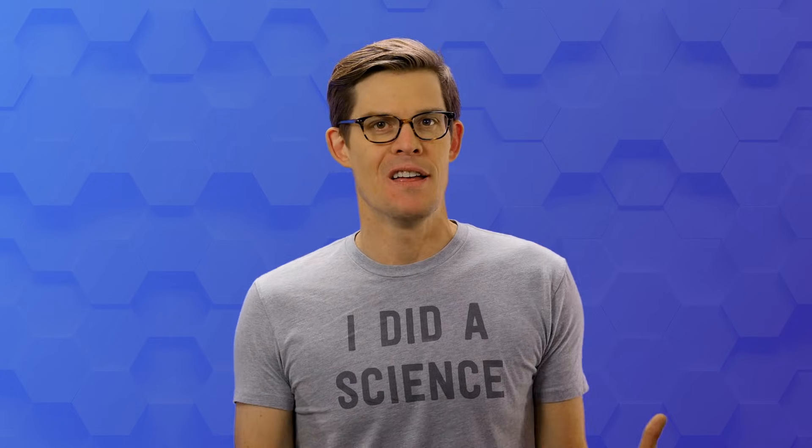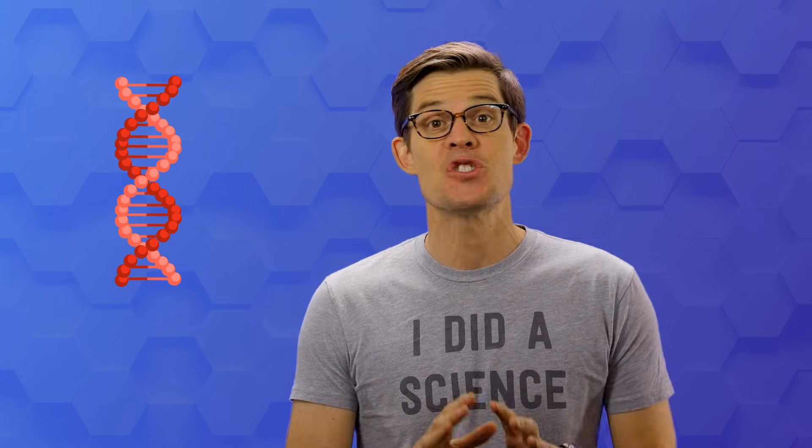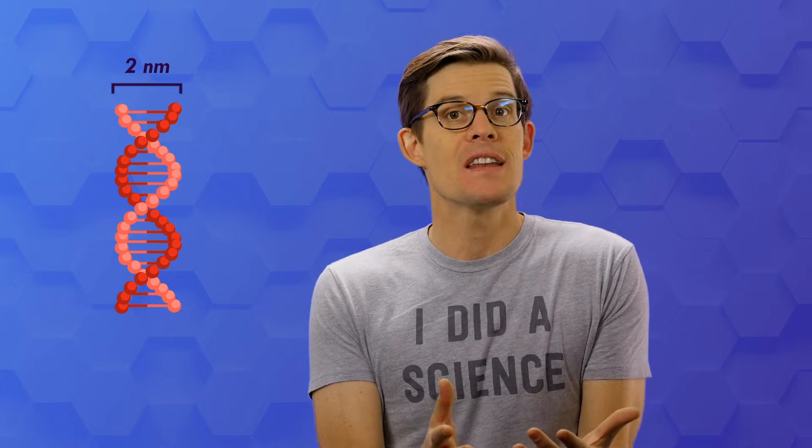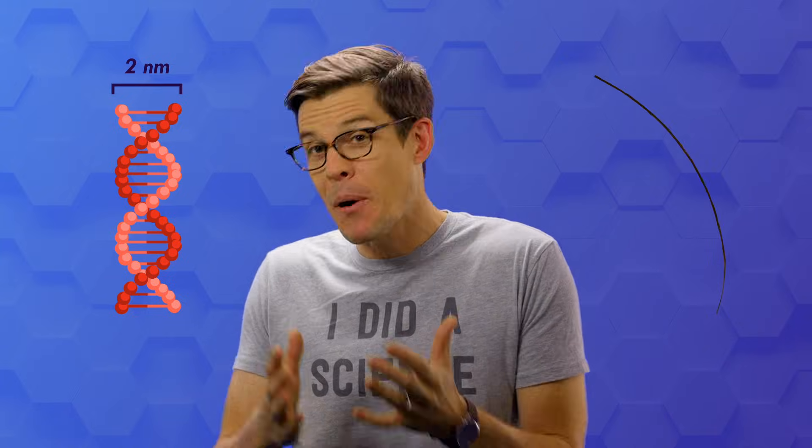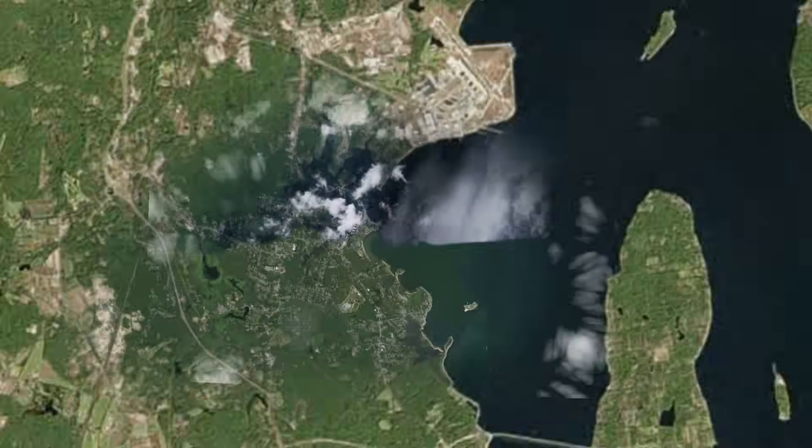Of course, you can't exactly take a photograph of DNA, or see it through your typical microscope. It's simply too small. A double helix of DNA is just 2 nm wide. The DNA strand next to a piece of hair is like a person standing next to the state of Rhode Island.